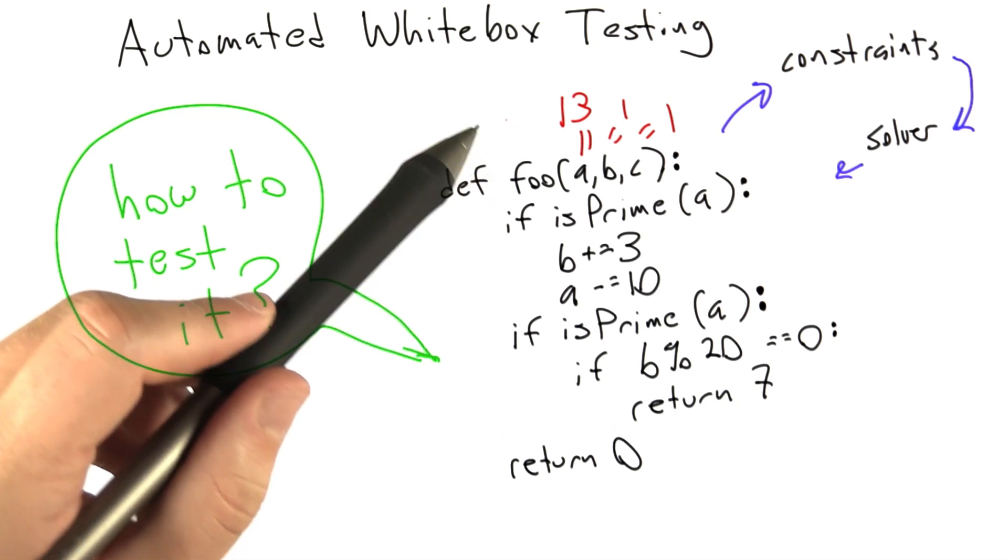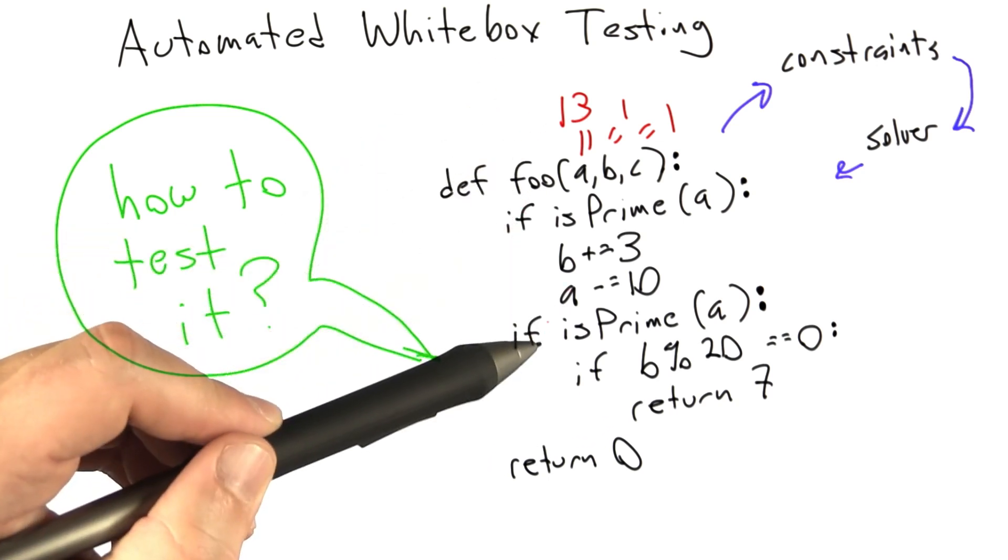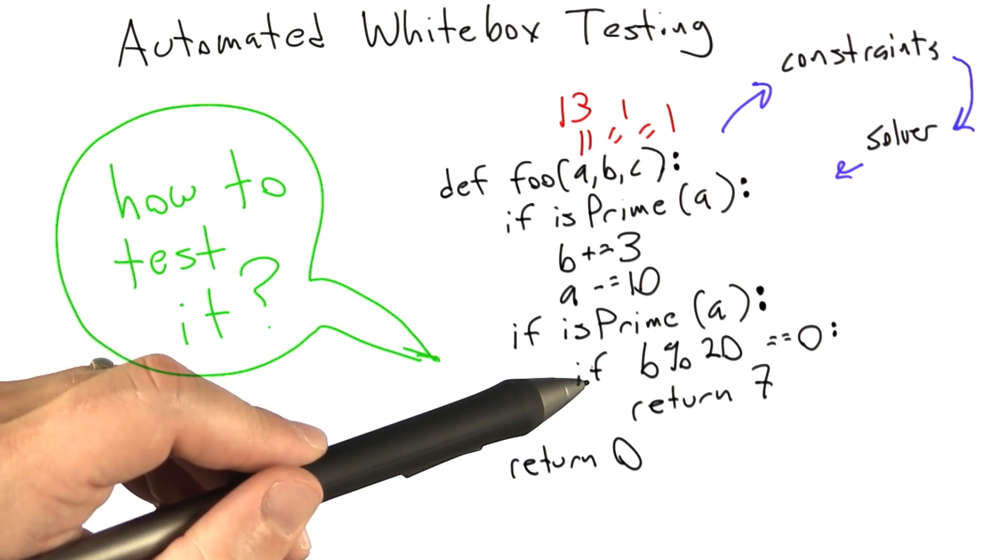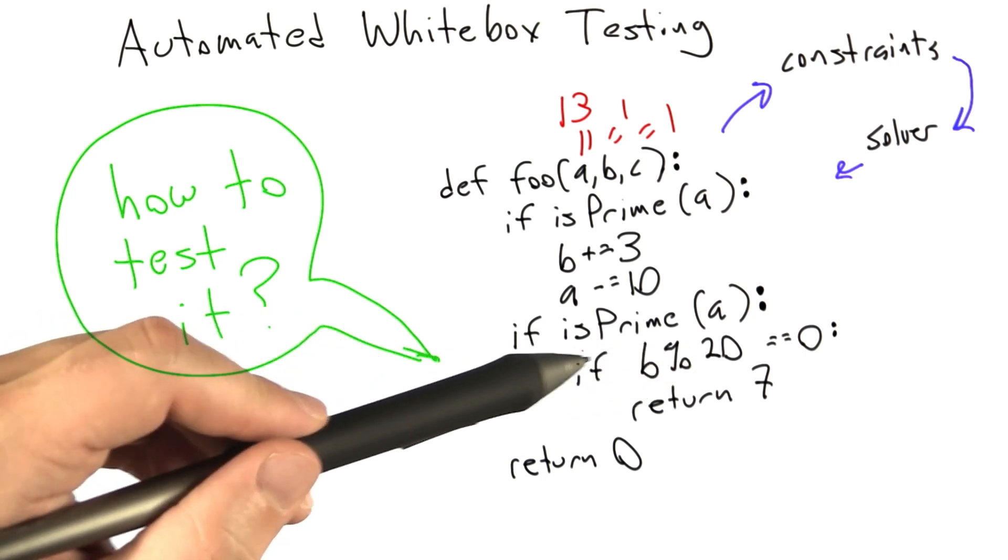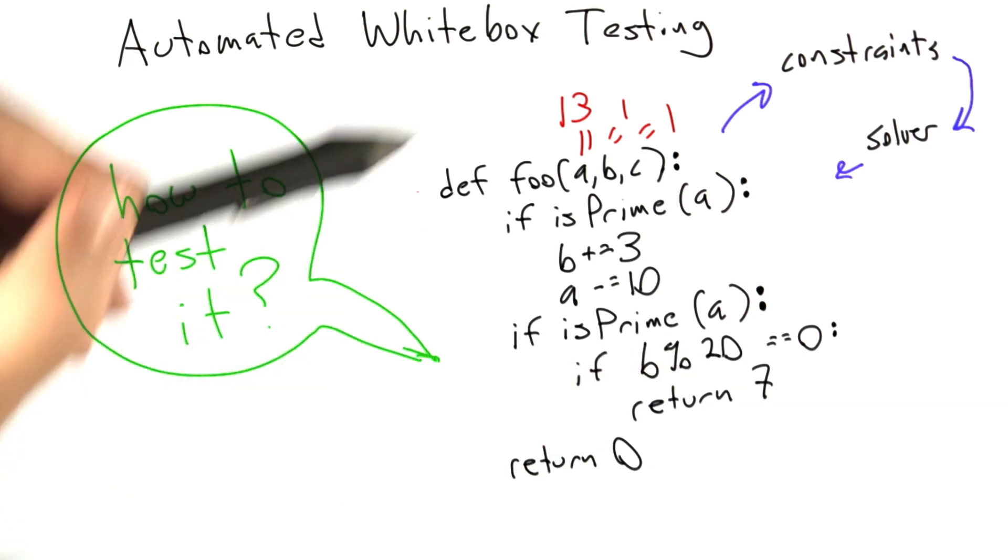Let's say the value of A it comes up with is 13. We're going to execute the function again. 13 is prime, so we're going to add 3 to B, subtract 10 from A giving 3. 3 is prime, so now we're going to ask if B is an even multiple of 20. If so, we would return 7, but it's not, so we're going to return 0.